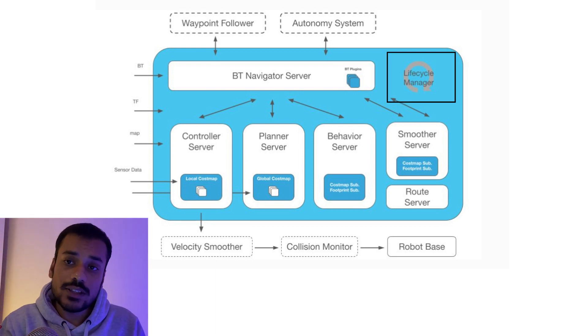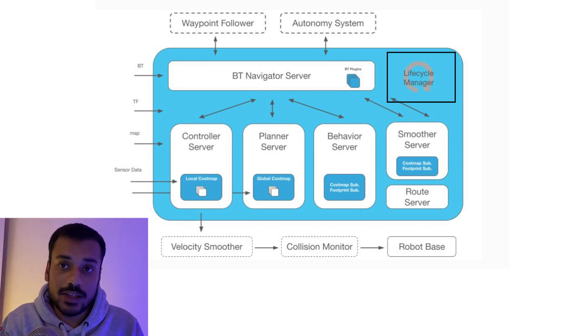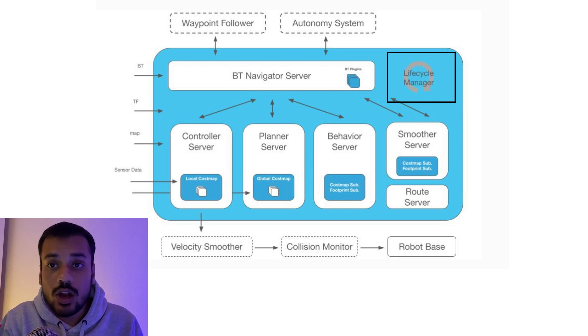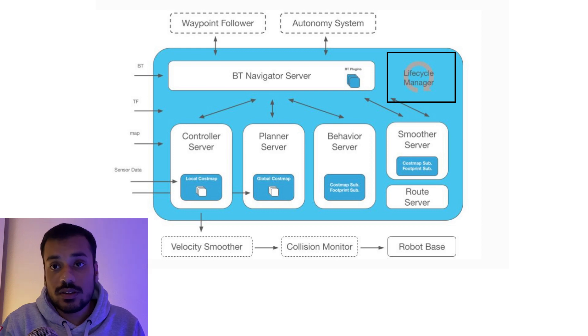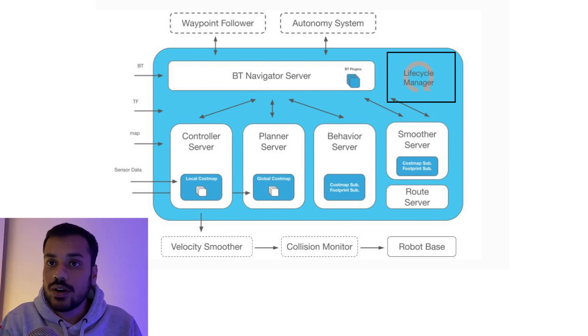Because of modularity and a configurable behavior tree instead of an unconfigurable state machine, you can decide how your control flow works. You also have something called a lifecycle manager — since ROS2 has managed or lifecycle nodes, all of these nodes are implemented as managed nodes, and the lifecycle manager has a lot of control over the life of these nodes.